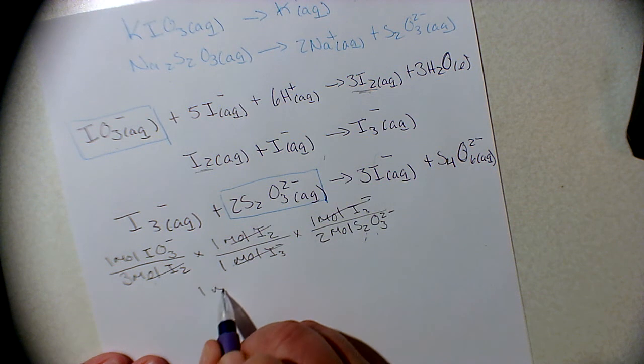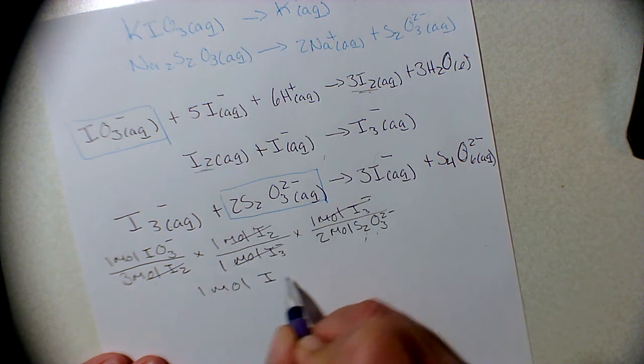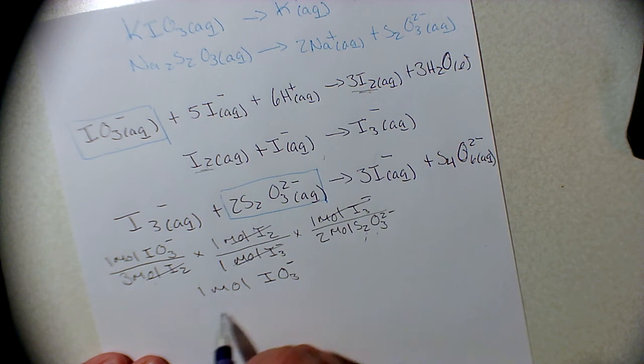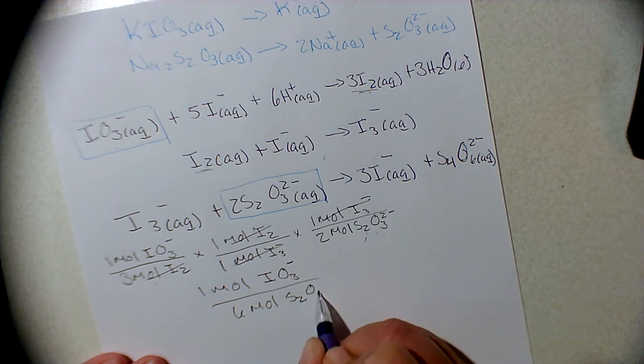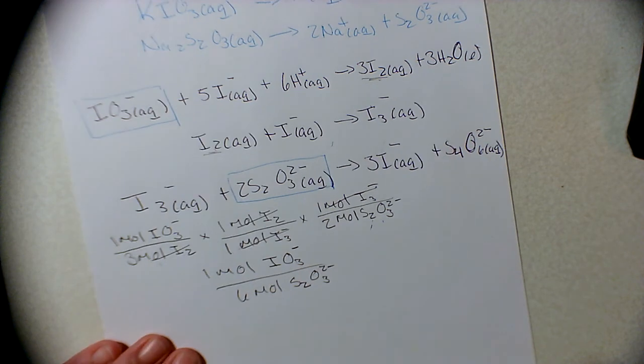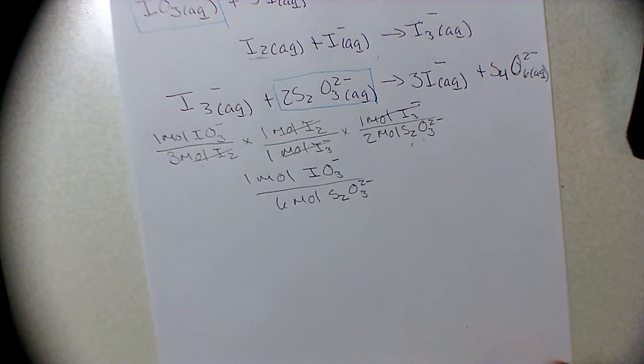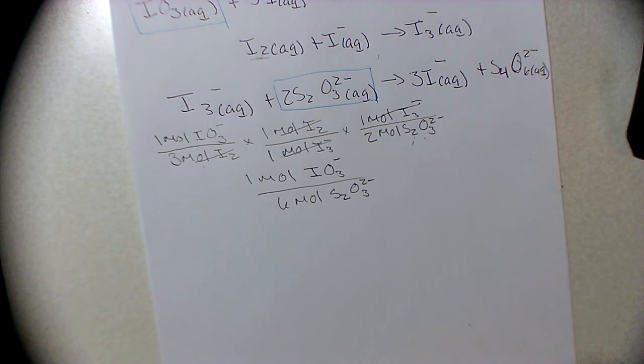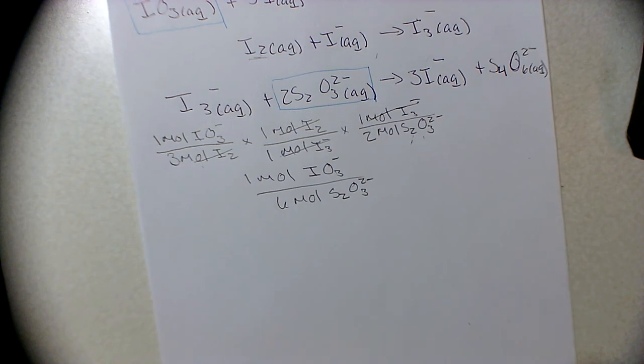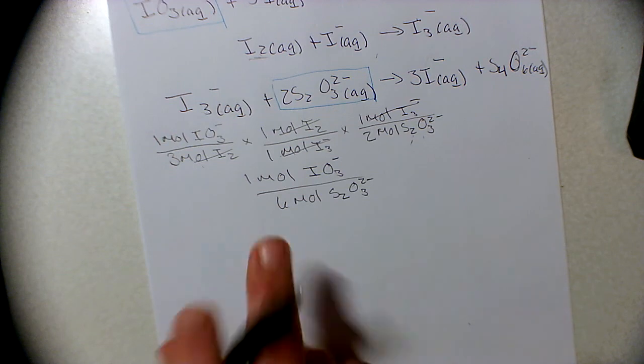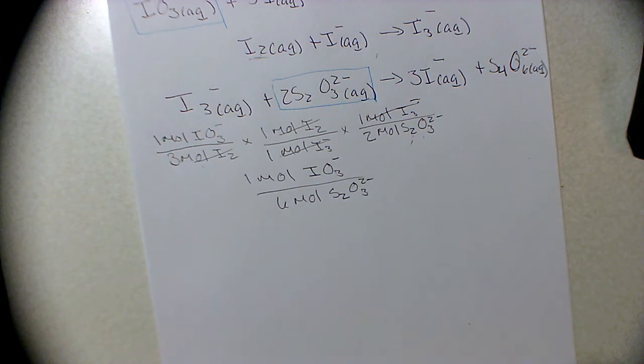Our final ratio ends up being one mole of IO3 minus to three times two, six moles of thiosulfate. So now our brief reminder: I don't remember if in this lab you're given actual molarity, so bear with me, I'm going to make some up. We know we start with a certain volume and a certain molarity of our potassium iodate, so I'm just going to call it 0.5 molar.